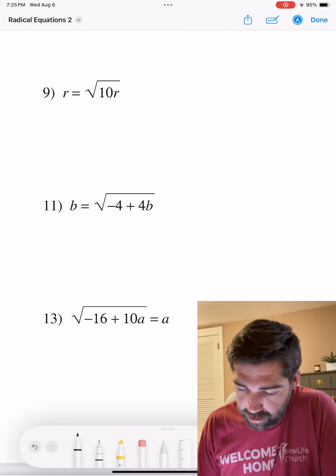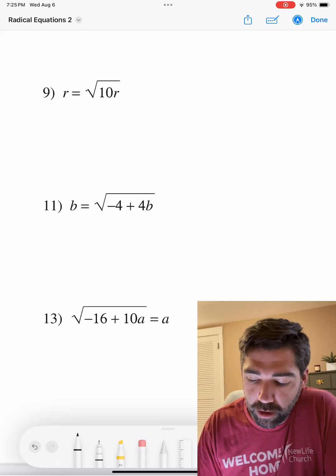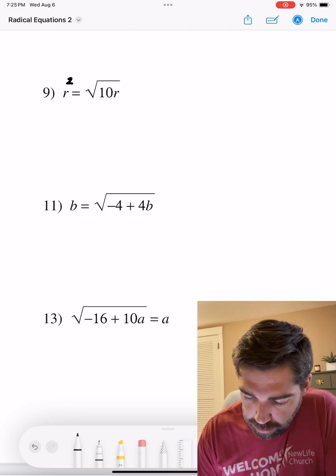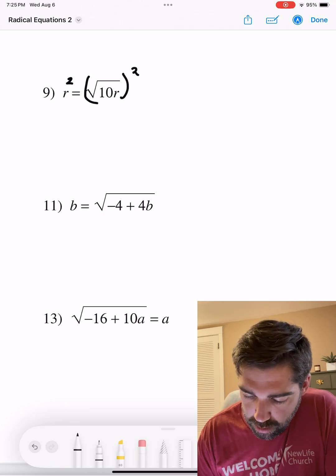All right, we're doing number nine. So we have r equals square root of 10r. Well, it's beautifully set up, ready to go for us. We're going to square both sides.